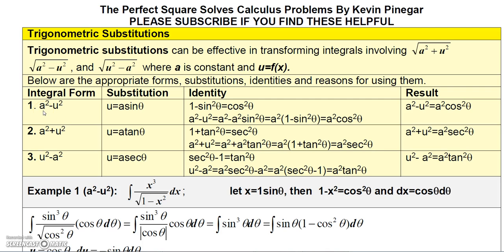If you see that your integral has the form of a squared minus u squared, you can use the substitution u equals a sine theta. The reason that works is because a squared minus u squared equals a squared minus a squared sine squared theta, and if you factor out the a squared, you get 1 minus sine squared theta, which gives a squared times cosine squared theta.